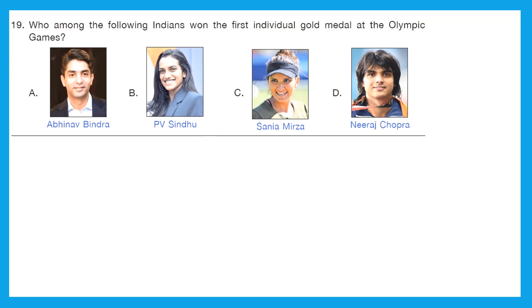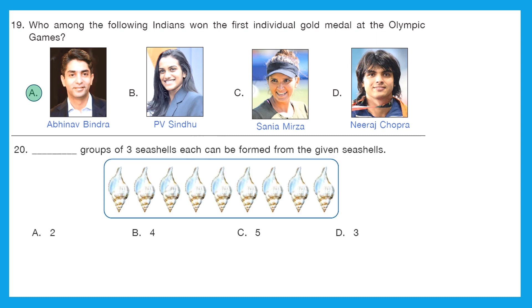Question 19: Who among the following Indians won the first individual gold medal at the Olympic Games? The right answer is option A — Abhinav Bindra. In 2008, Abhinav Bindra, an Indian shooter, became the first Indian individual Olympic gold medal winner.